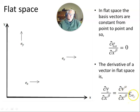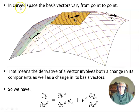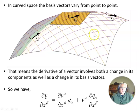In flat space, the derivative of a vector is simply the partial derivatives of the components of the vector, not the basis vector. But on curved spaces, the basis vectors vary from point to point. Each point on the manifold has its own tangent space, and the basis vectors and any other vectors at that point belong in that tangent space.